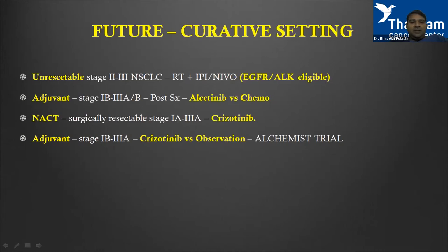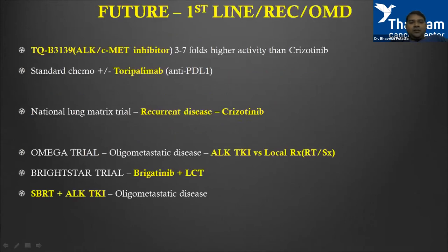In the adjuvant setting, alectinib versus chemotherapy has been studied, as has crizotinib versus observation in the ALCHEMIST trial, and crizotinib in a neoadjuvant setting. Among newer molecules, TQB3139 is a combined ALK and c-MET inhibitor with higher activity than crizotinib. Standard chemotherapy plus or minus toripalimab (anti-PD-L1) is being explored in recurrent disease. The National Lung Matrix trial is evaluating crizotinib further, and there is a growing trend toward treating oligometastatic lung disease with ALK TKI combined with local consolidative therapy or SBRT.